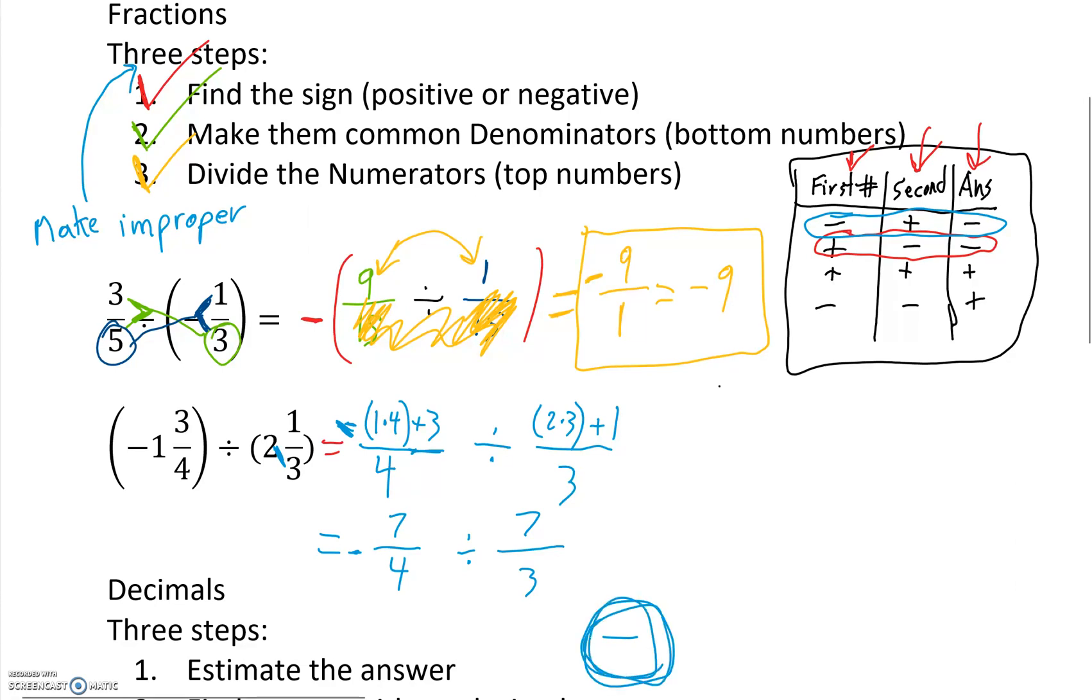Last step here says divide the numerators, which are the top numbers. So divide the top numbers, and don't forget this negative that we pulled out before. Divide the top numbers. Well, top number is 21 divided by 28. And that is our final answer.